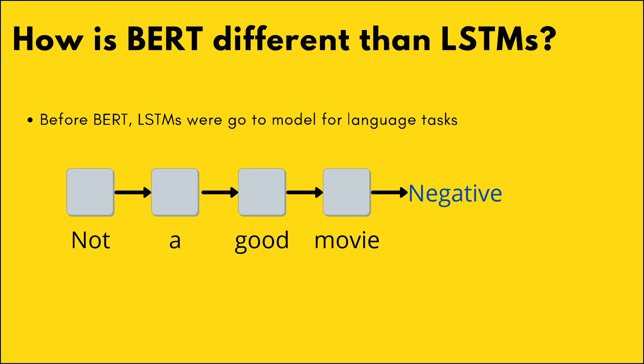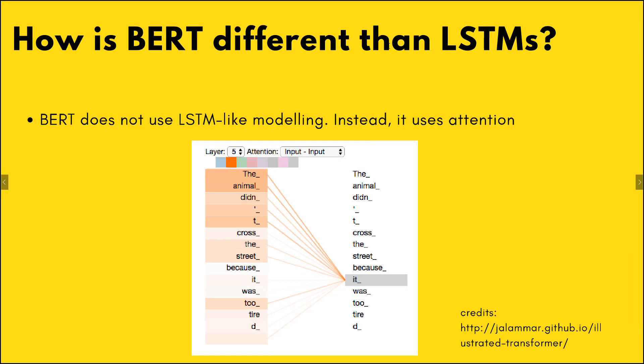Traditionally, LSTMs were the go-to model for any language task. What LSTMs and RNNs do is they take an input sentence and start with the first word from the left, and the information learned is passed to the right — meaning the next word has the information from the previous word as well as its own information, and so on. A meaningful representation is generated which is used for multiple use cases.